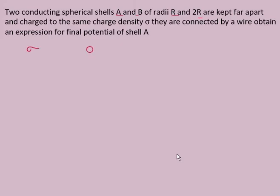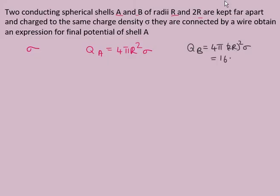The charge on shell A is QA = 4πR²σ, and the charge on shell B is QB = 4π(2R)²σ, which gives QB = 16πR²σ. So we have obtained the values of QA and QB.